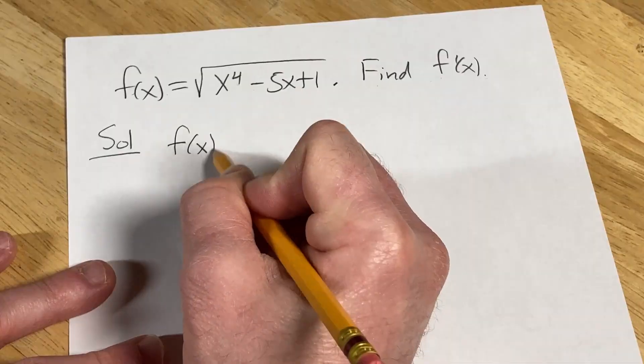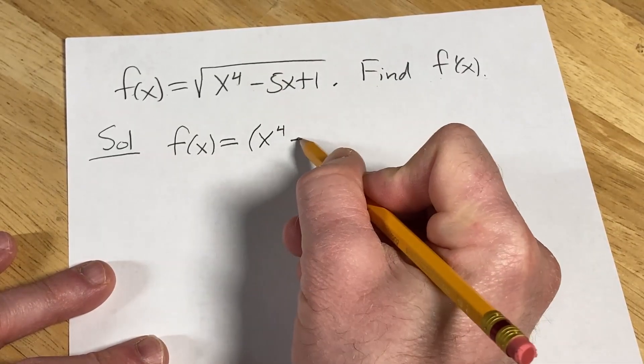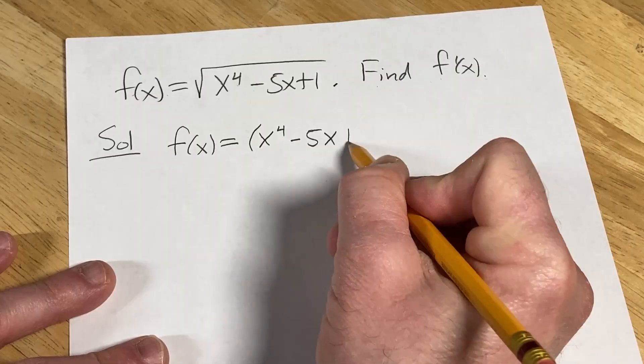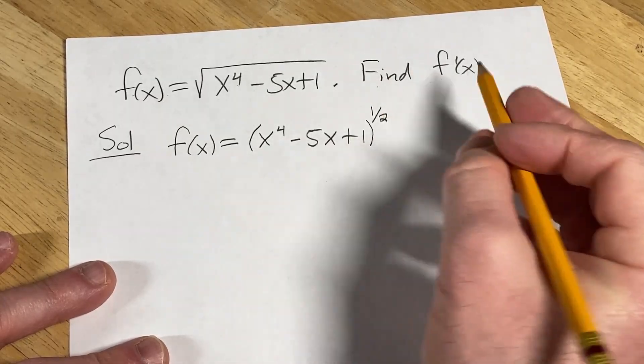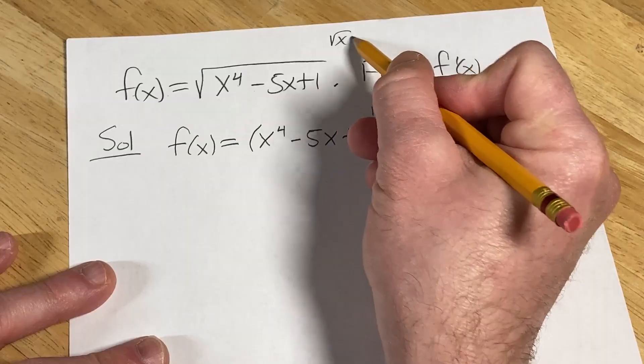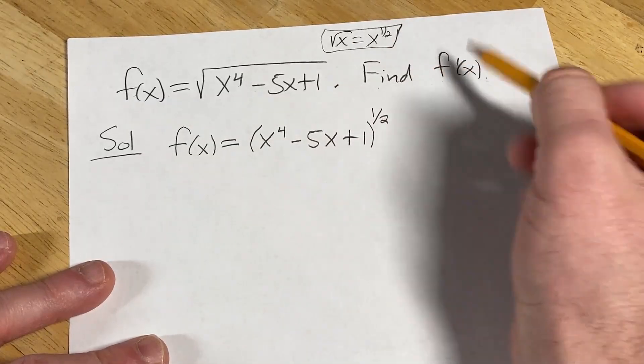f of x is equal to parentheses x to the fourth minus 5x plus 1, and this is all being raised to the 1 half power. You can do that because the square root of x is the same thing as x to the 1 half. Super useful to know this because you can use it here.